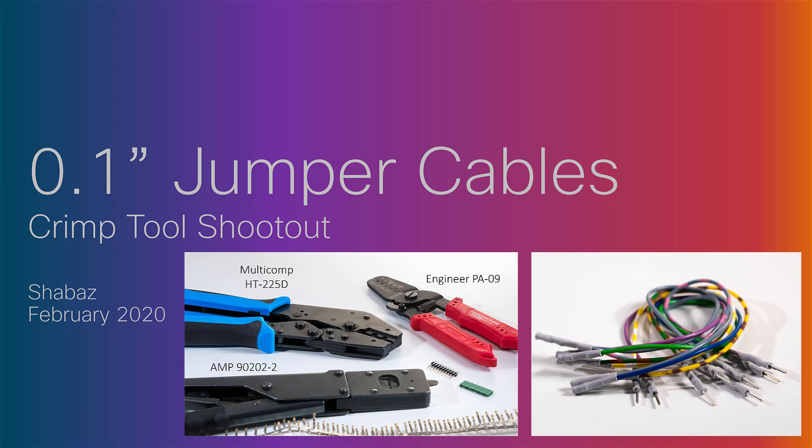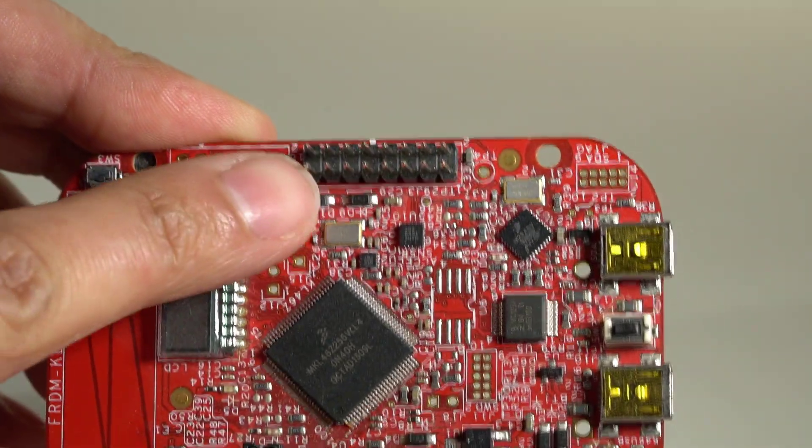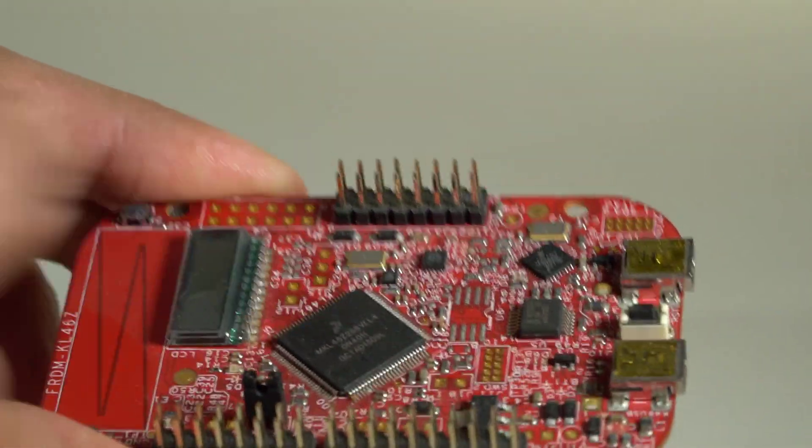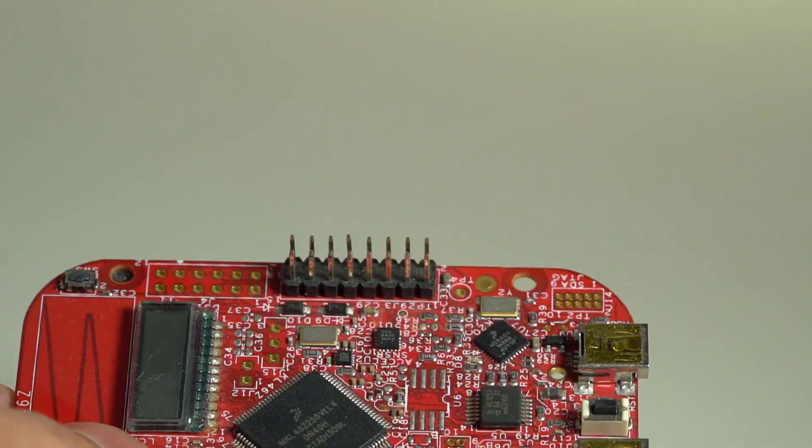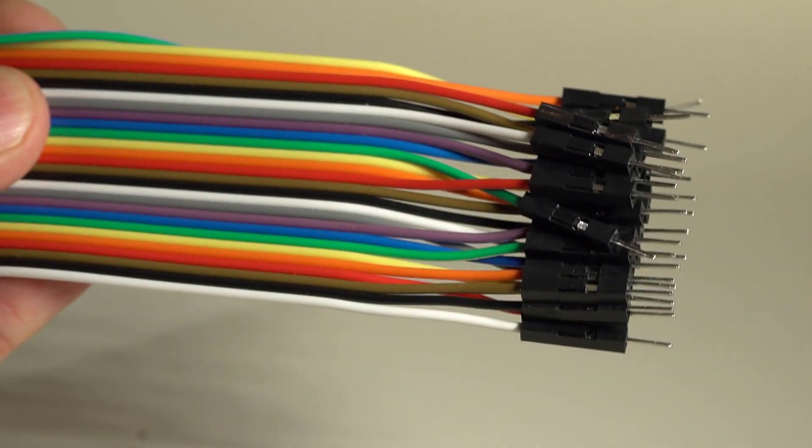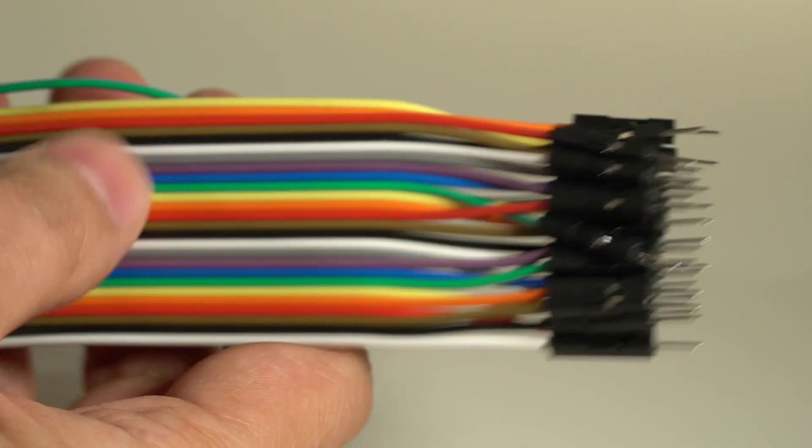Hi. When working with development boards such as this one, you need jumper cables either with pins or sockets, 0.1 inch header pins or sockets, to work with these. You can buy them ready made, such as these ones. I do tend to use these quite a lot just for test purposes when developing something.